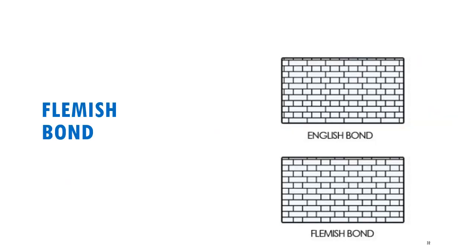Finally, the Flemish bond is one where you've got a header placed next to a stretcher — header, stretcher, header, stretcher — and each row is basically composed of that alternating pattern, which then repeats. In today's lecture, I described masonry as a construction material, talked about the various masonry units and the materials that make them up, briefly explained how masonry structures are designed with reference to AS3700, and talked about the brick bond and the pattern that's important to ensure your bricks interlock with one another.